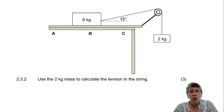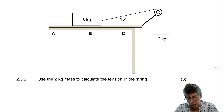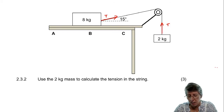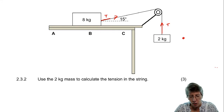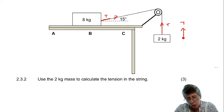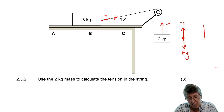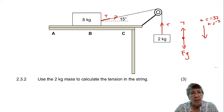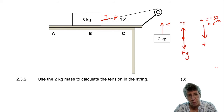In 2.3.2, they ask us to use the 2 kilogram mass to calculate the tension in the string. The tension on both ends of the rope is exactly the same, but we're only focusing on the 2 kilogram object. Drawing a force diagram for that 2 kg object: tension works upward and gravity works downward. Since the system is accelerating, with acceleration downward at 1.32 metres per second squared, that is my positive direction.